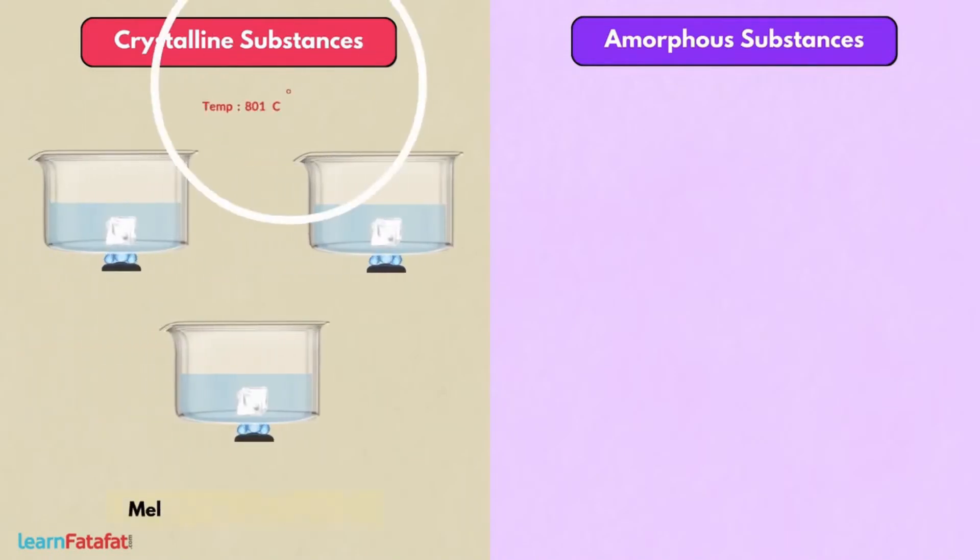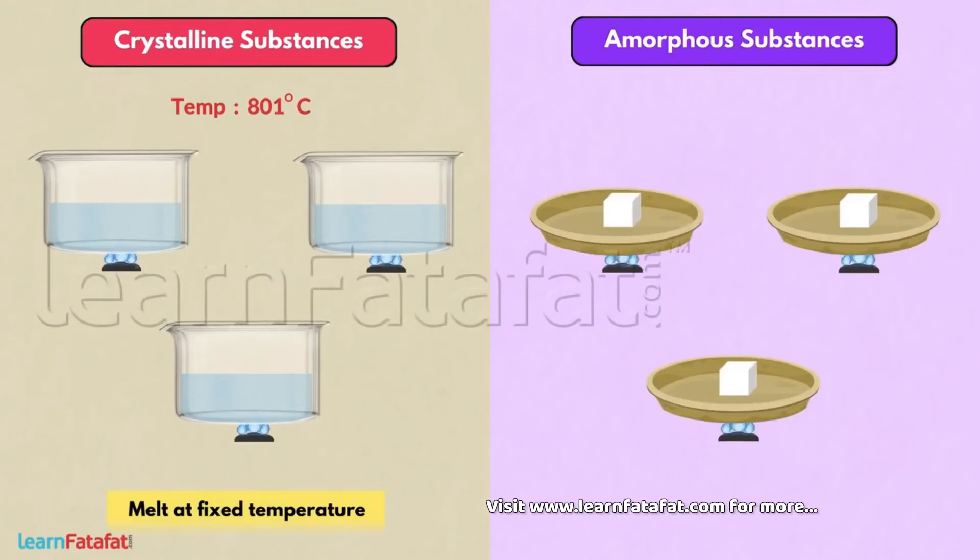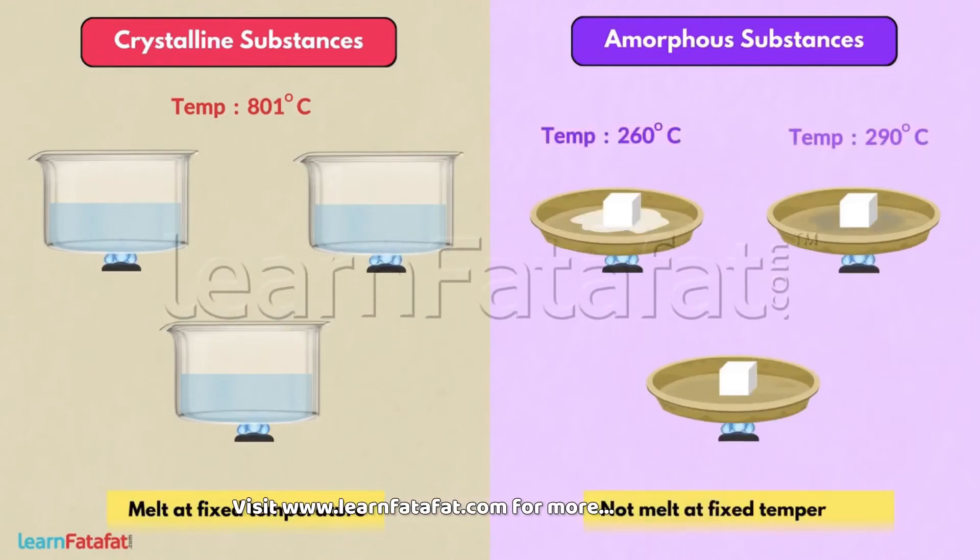Crystalline substances melt at fixed temperature. However, amorphous substance doesn't melt at same temperature.